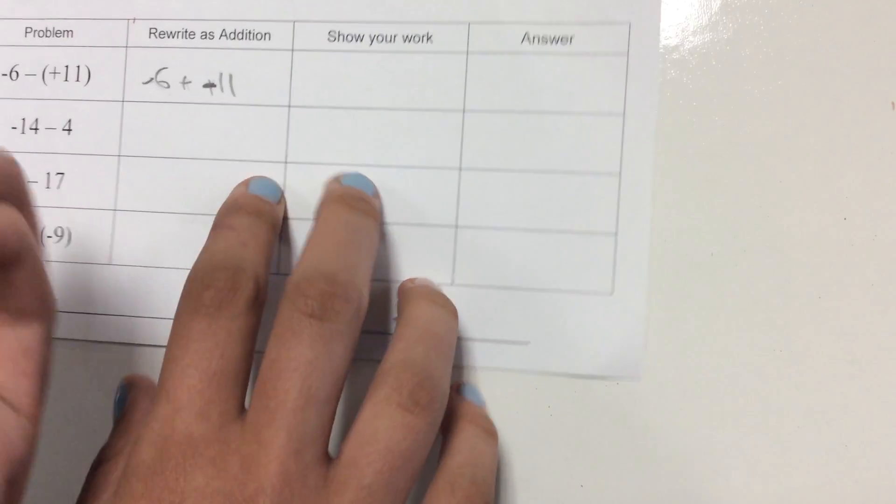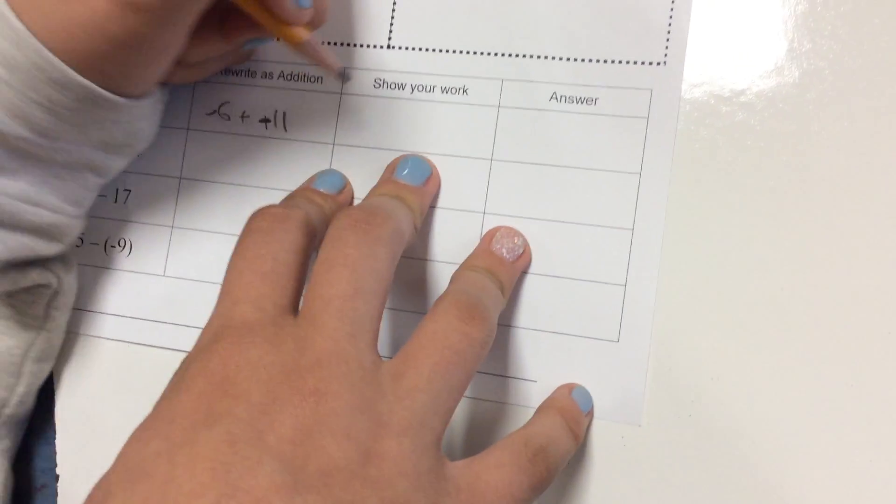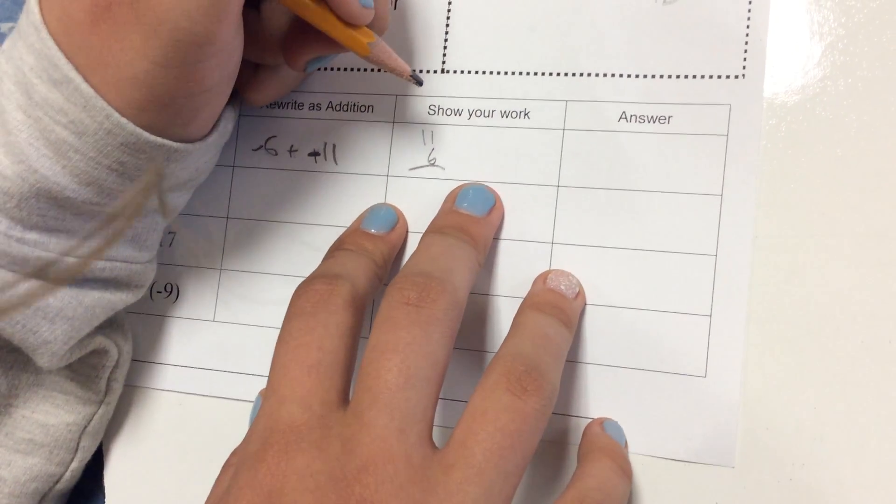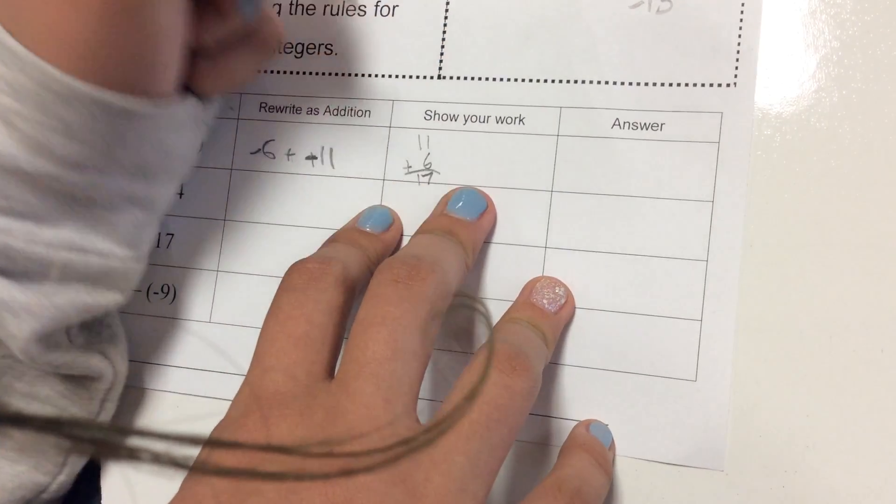Okay. So, then you would just add these - eleven and six. I'm only going to show you one of these. So if you just add those, it'll just be seventeen.